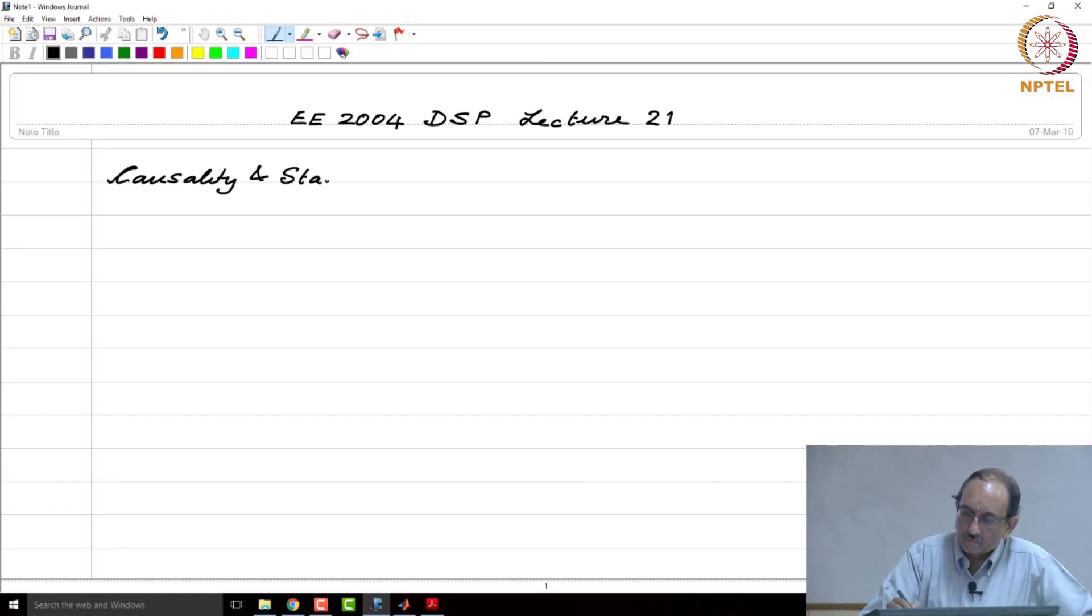Causality and stability. After we are done looking at causality and stability, we will look at response to suddenly applied inputs.